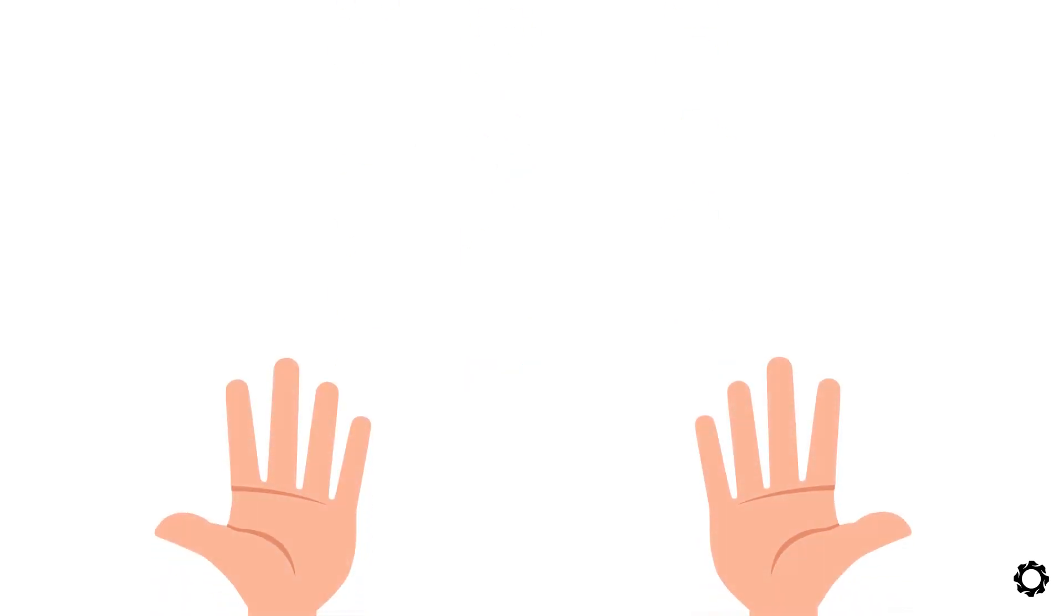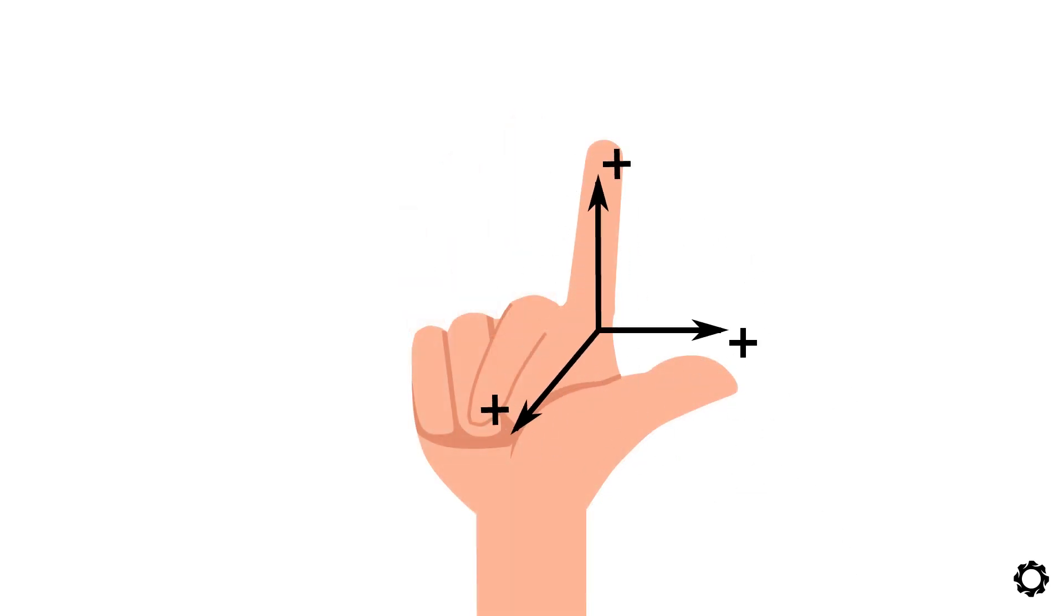For the Cartesian system, we often employ the right-hand rule to set the positive and negative directions. This rule tells us that the positive axes follow the fingers of the hand, and correspondingly, the negative axes follow the opposite direction. We cannot get something simpler than this.